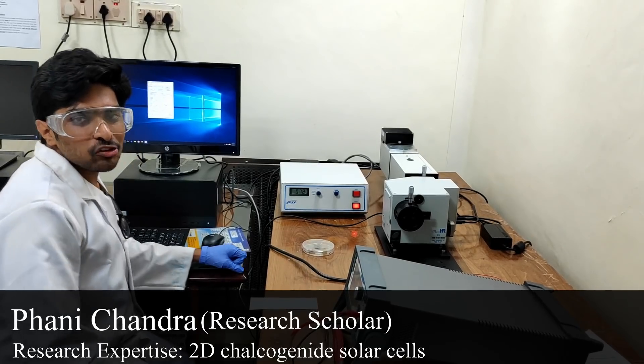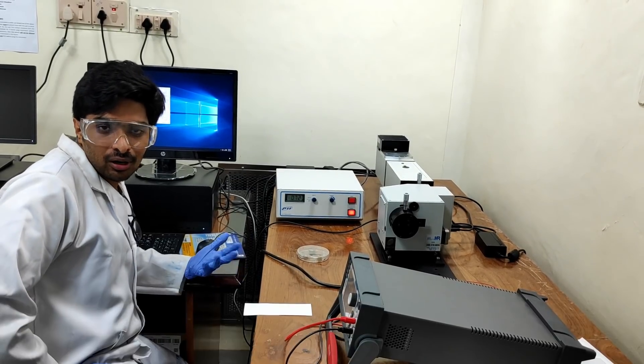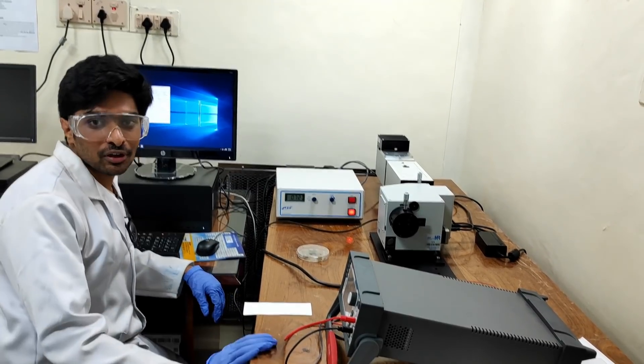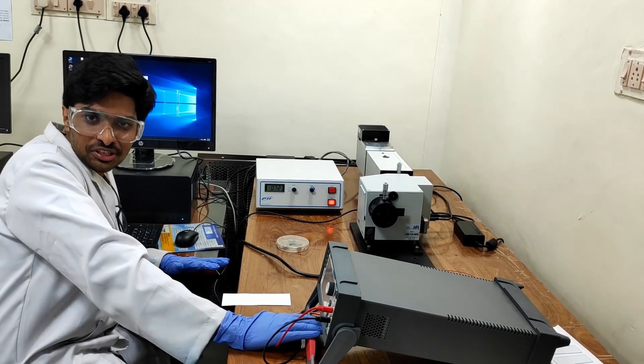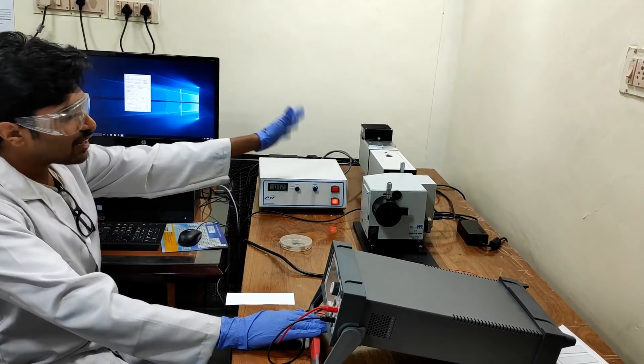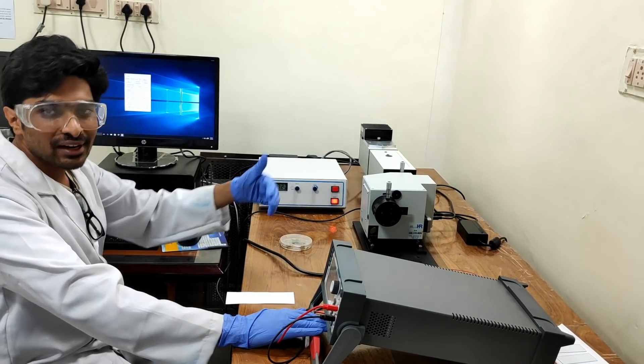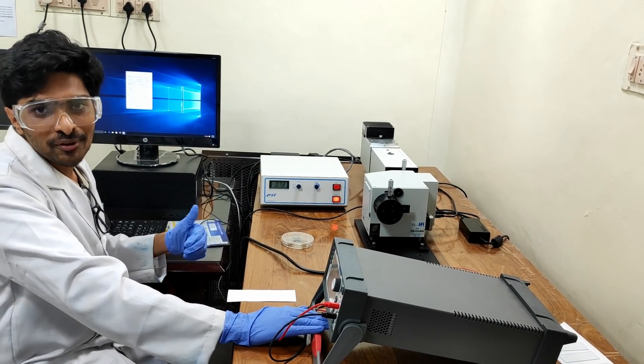Hi guys. We are building a spectroelectrochemical workstation which is used to do quantum efficiency measurements and also electrochemistry. So this is the source meter which is used to do electrochemistry studies. And this is the light source which is connected to a grating splitter and detector through which we can do quantum efficiency measurements.